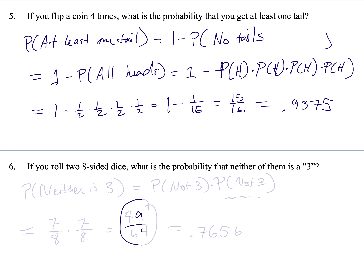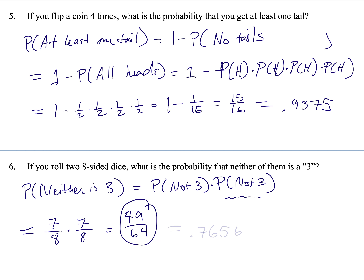If you roll two eight-sided dice, what is the probability that neither of them is a three? The probability that neither is a three equals the probability the first is not a three, times the probability the second is not a three. Die rolling involves independent events, so when calculating the second probability, we don't need to keep the first outcome in mind. This is an eight-sided die, so there are seven values that are not three out of eight, times seven out of eight. That gives 49 out of 64, or as a decimal, 0.7656.